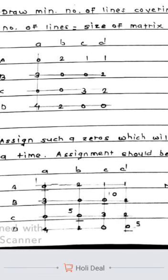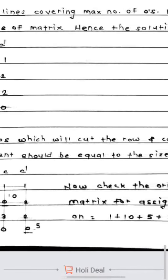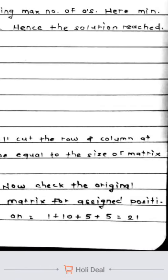At the fourth position, value is ten. And at last position, the value is five in the original matrix. You need to take those values and add them. So this is one plus ten plus five plus five. So total twenty one units is the minimized cost for allocation.